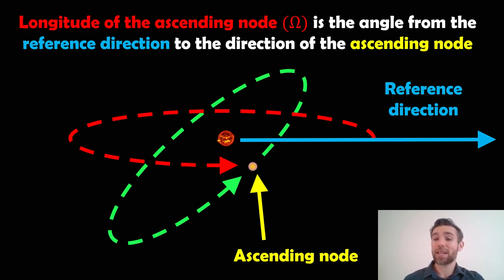The blue line here is the reference direction. What we're going to do is rotate around on the orbit until we get to the point where it's the ascending node. That angle there is your longitude of the ascending node. This is an important orbital element. If you're looking at orbits, it'll be quite important to understand what this would be.